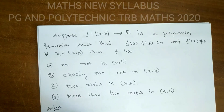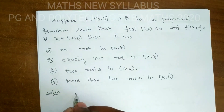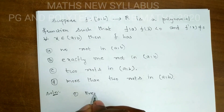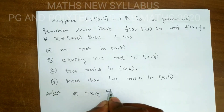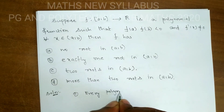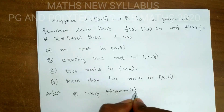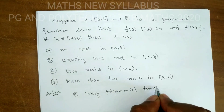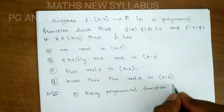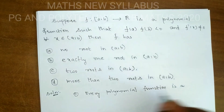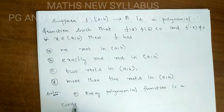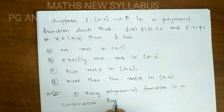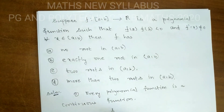Every polynomial function is a continuous function. Therefore, f is continuous.